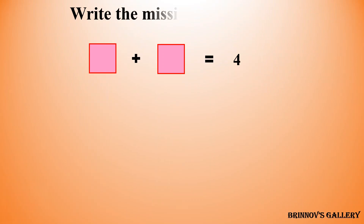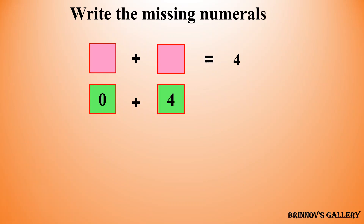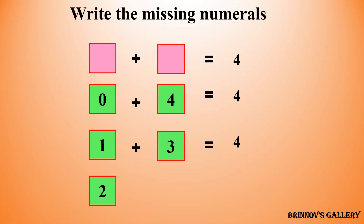Write the missing numerals. Zero plus four is equal to four, or we can also have one plus three is equal to four, or two plus two is equal to four, or three plus one is equal to four. We can choose any option from these possibilities to fill the missing numerals.